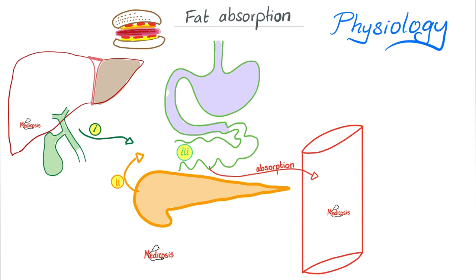Why did the common bile duct join with the pancreatic duct? Because both share the same function: fat digestion and therefore fat absorption. You need bile to digest fat, and you need pancreatic enzymes such as lipase, colipase, phospholipase, etc. to digest fat. Since both are digesting fat, they join forces and open together in the posteromedial aspect of the second part of the duodenum to digest fat together.